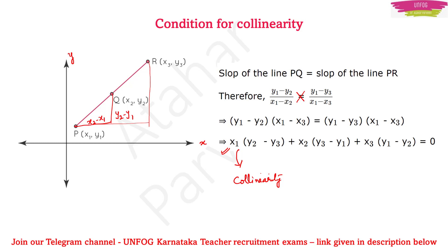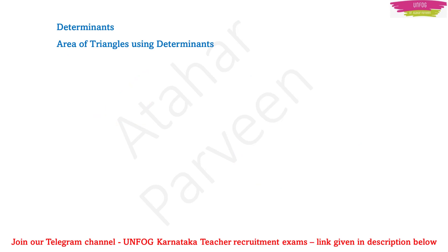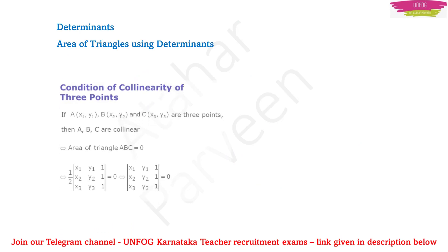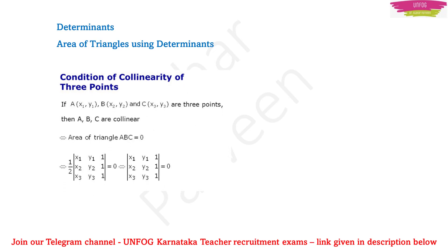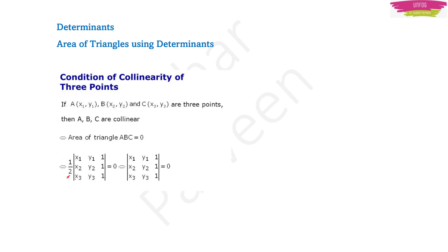This condition for collinearity can also be derived by another method — the method of determinants. Here, the area of triangle ABC is given by one-half times the determinant with rows x1 y1 1, x2 y2 1, and x3 y3 1. This determinant is set equal to zero, and since zero is on the right-hand side, the half vanishes.